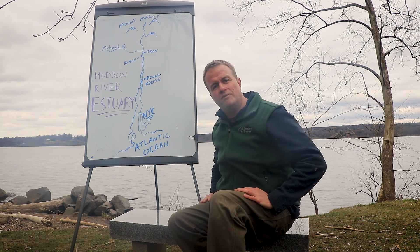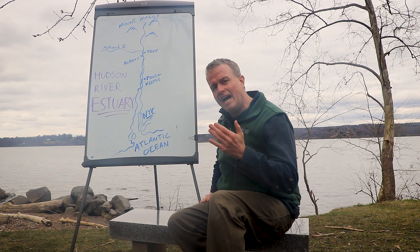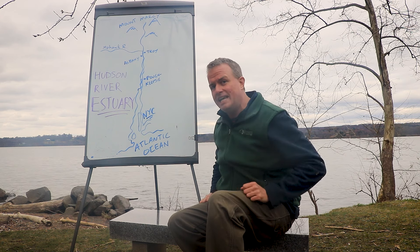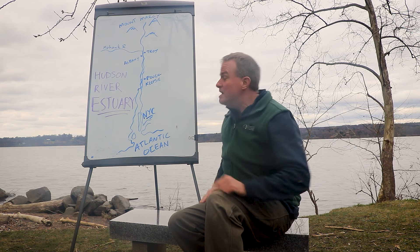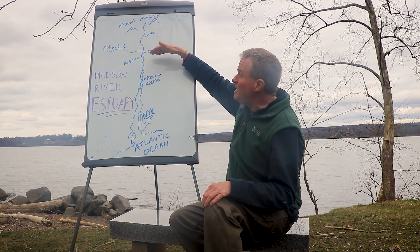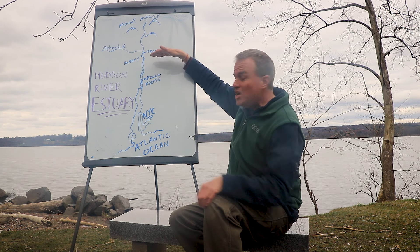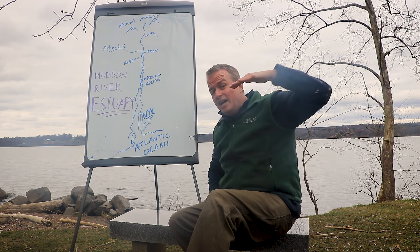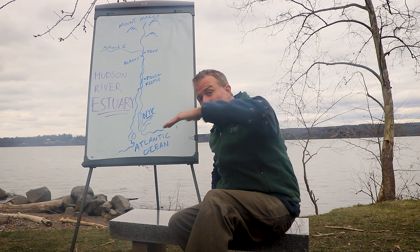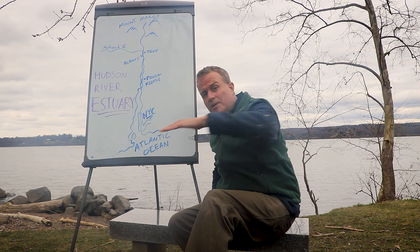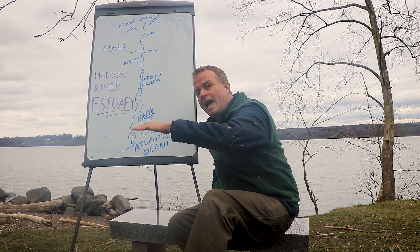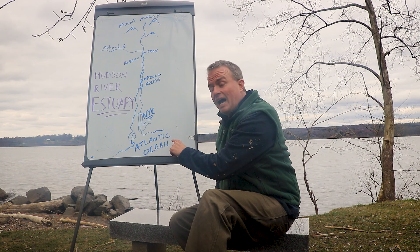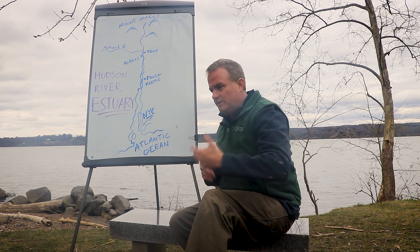Basic definition of a river — got it. But an estuary is more complicated than that, because from Troy and Albany all the way to the Atlantic Ocean, the Hudson River doesn't drop very much. It's pretty flat. So the same tides that you have at the Atlantic Ocean, the tides that you're all familiar with on beaches...